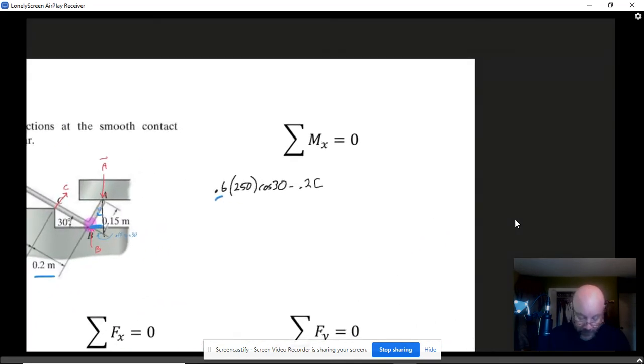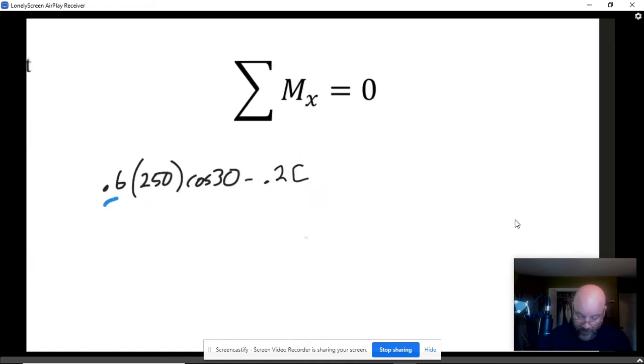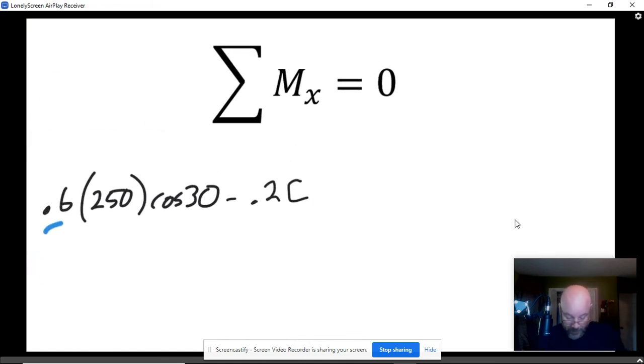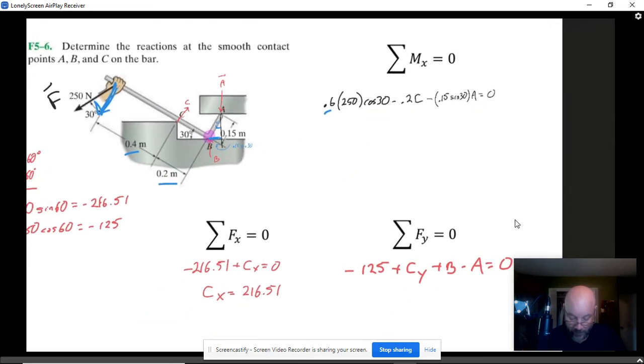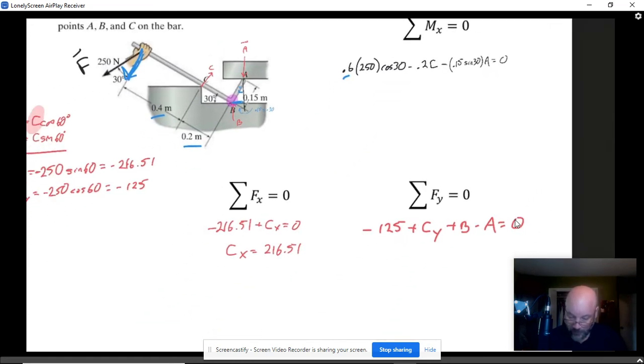Shrink that up, scoot things around. It's also clockwise, so that means it's going to be negative. We got minus 0.15 sine of 30 degrees. That's our moment arm times the magnitude of A is equal to 0. There we go.